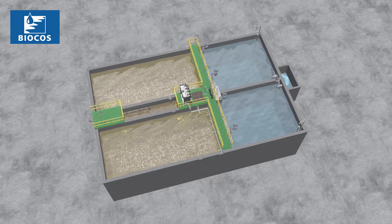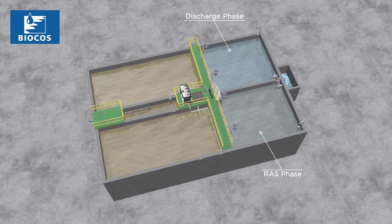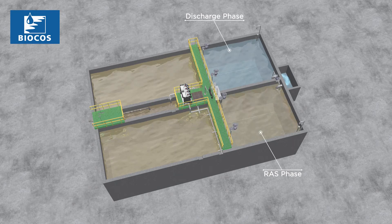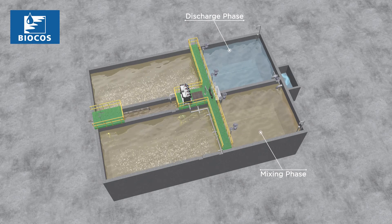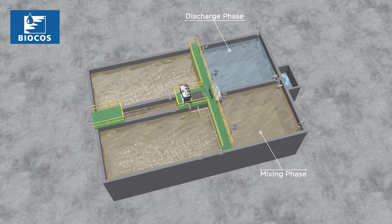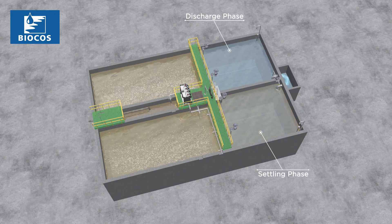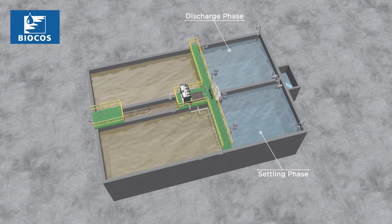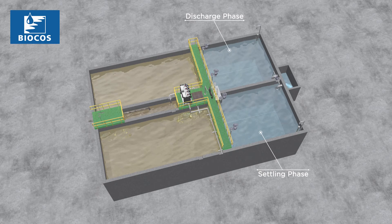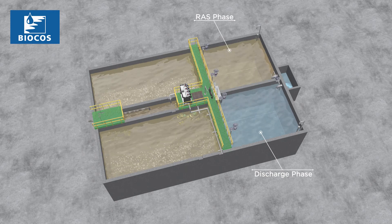The BioCoast process is designed to be operated at preset time-controlled process cycles. The typical cycle duration is around 1.5 hours. Each cycle is divided into an RAS phase of 8 to 15 minutes, a mix phase of 2 to 3 minutes, a sedimentation phase of 27 to 35 minutes, and a discharge phase of 45 minutes. The preset cycle schedule may vary on a seasonal basis, but usually not on a daily basis, mainly depending on the kinetic rates, sludge properties, and the required sludge inventory.